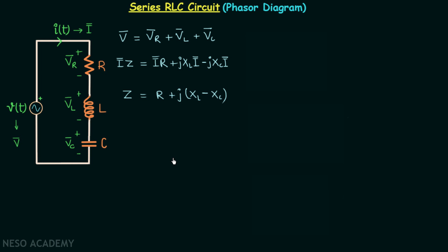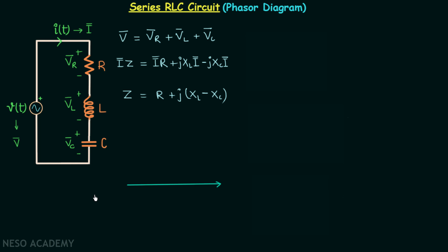Step number one to draw the phasor diagram is to choose the reference phasor. I will choose I phasor as the reference phasor because current i(t) is the same throughout the series circuit.